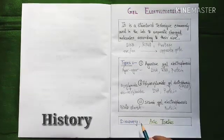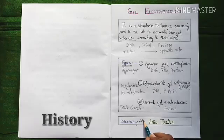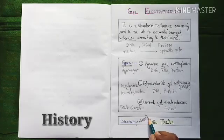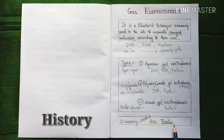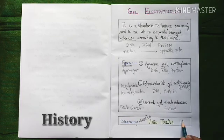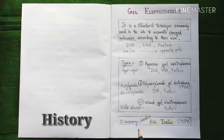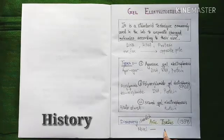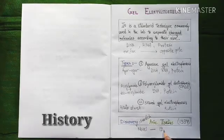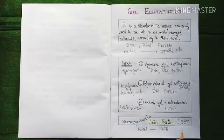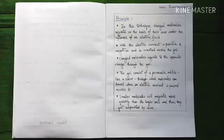Now let us move to the discovery or history of the process. Who discovered this technique? This technique was first discovered by Swedish biochemist Arne Tiselius. He discovered this process in the year of 1937 and he was awarded Nobel Prize for this discovery in the year of 1948.